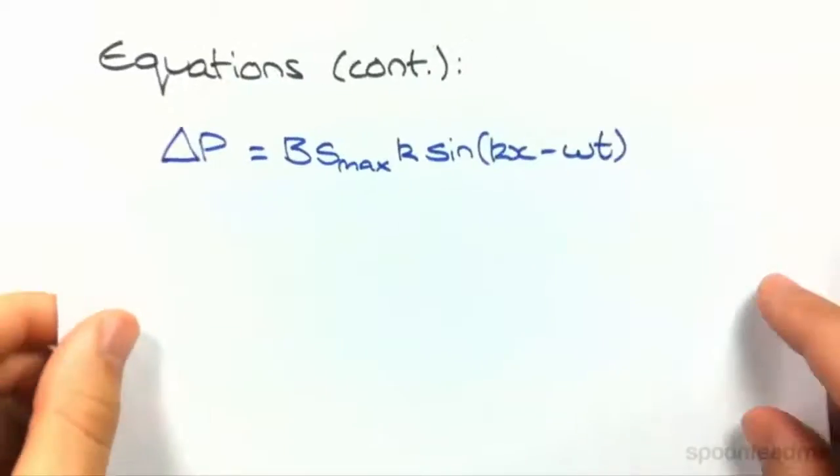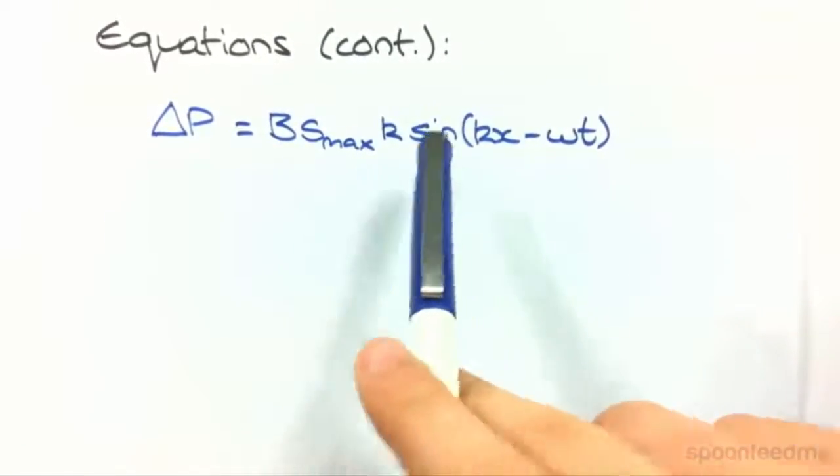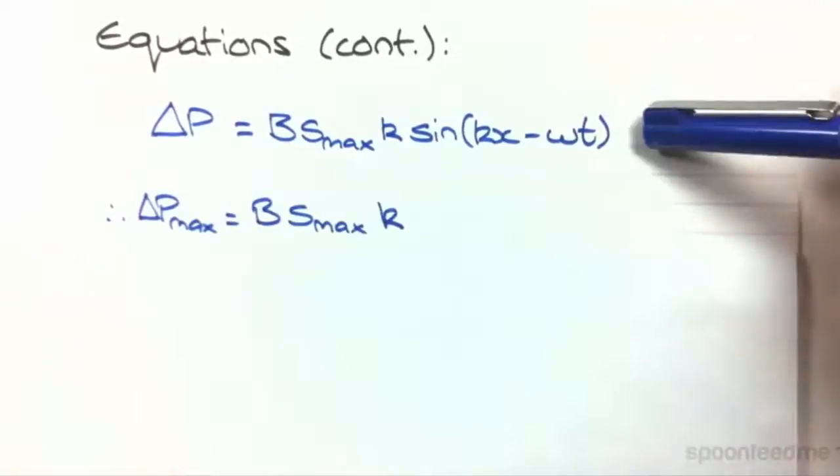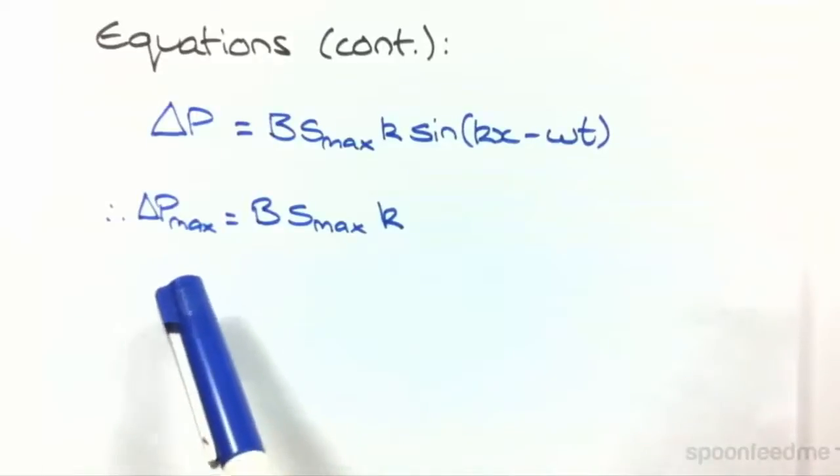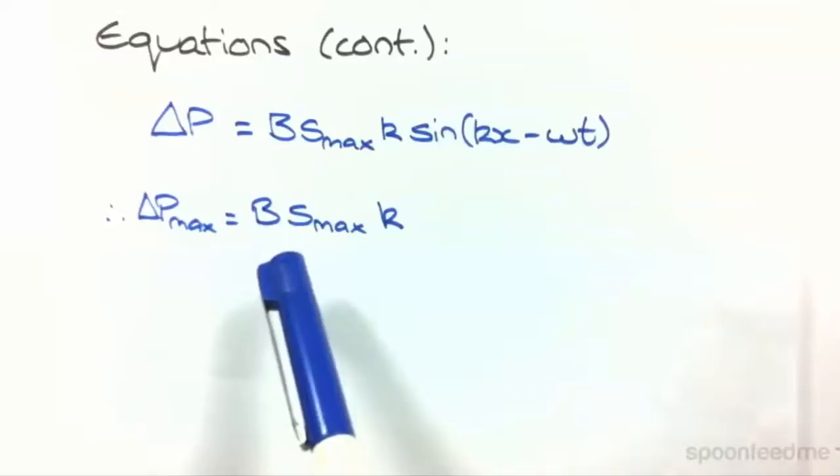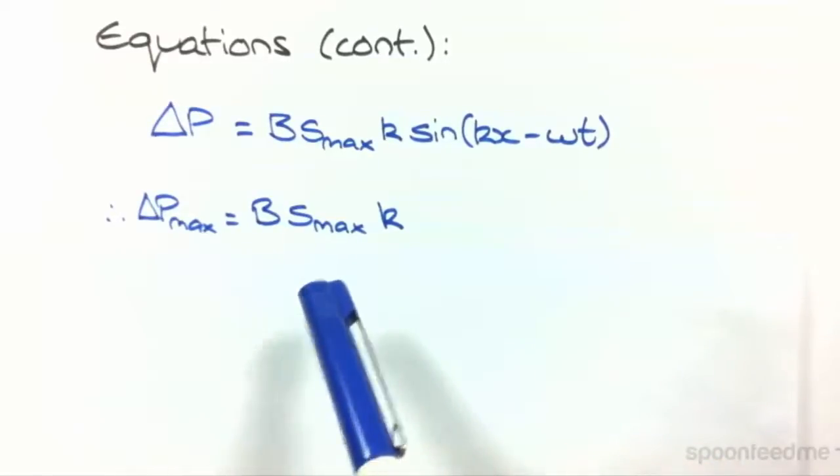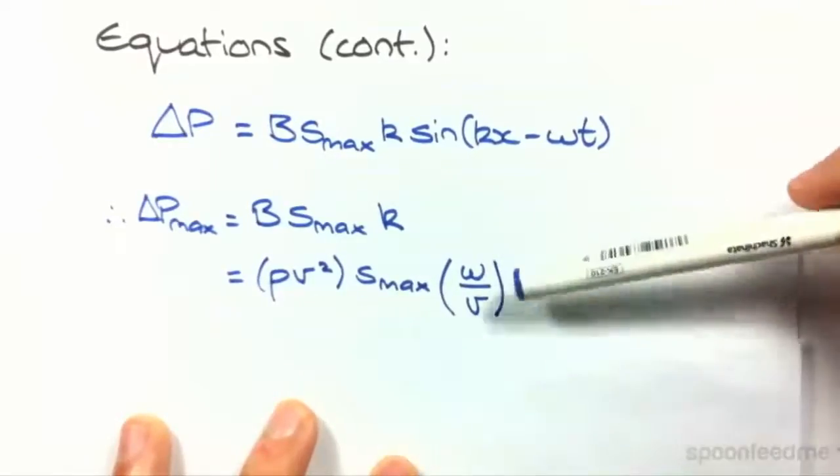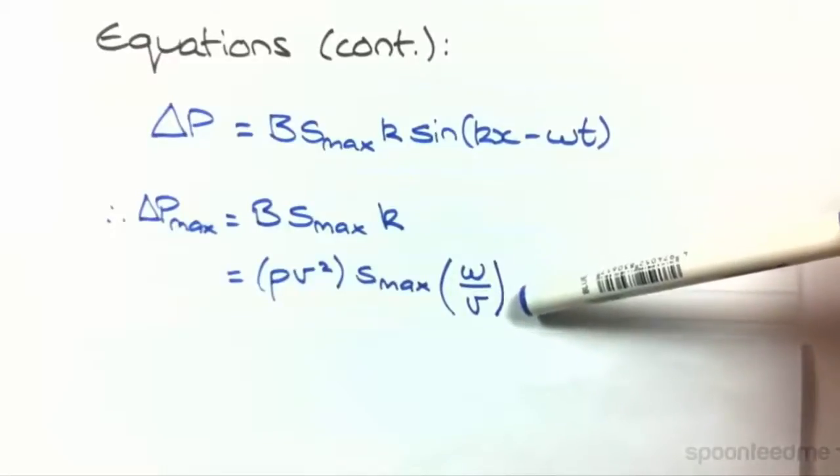Alright, we're just gonna go back to the equations and have a quick look here. If you recall that pressure equation, which is equal to B times smax k sin(kx - ωt), what we want to find is the max pressure, which looks like this. Because we know that the maximum value for sin is 1 or minus 1, but in this case, we just take the positive. So the change in pressure max or the amplitude of the change in pressure is equal to that bulk modulus times smax k. But this bulk modulus isn't actually so useful for us to look at. We'd rather write it in terms of density and velocity of a sound wave through a medium. So we can actually substitute in this ρV squared, which we looked at before. And for k, we know from previous videos, I'll leave that as an exercise for you guys to work out. k is actually equal to ω over the velocity of a wave through a medium.